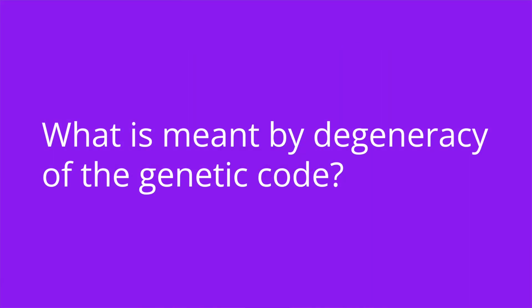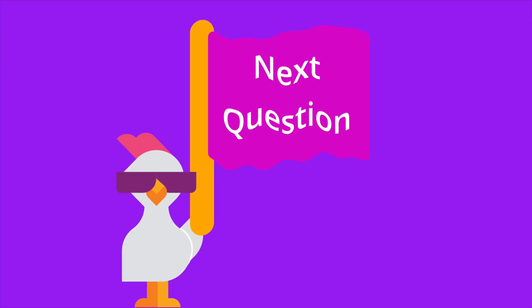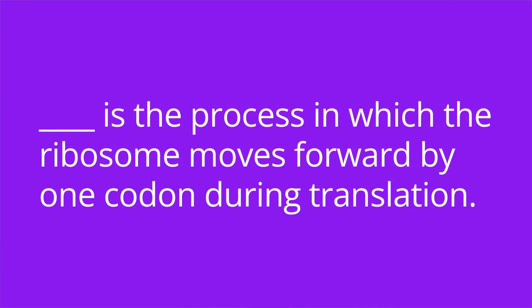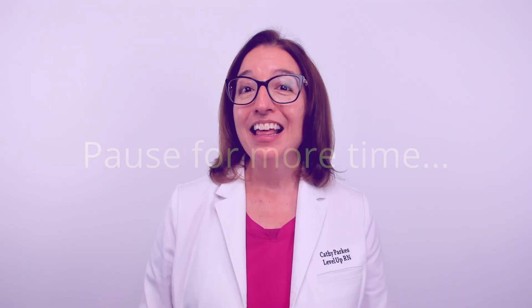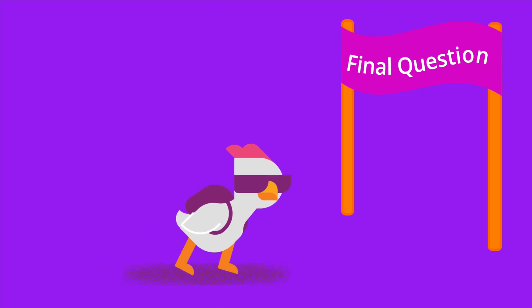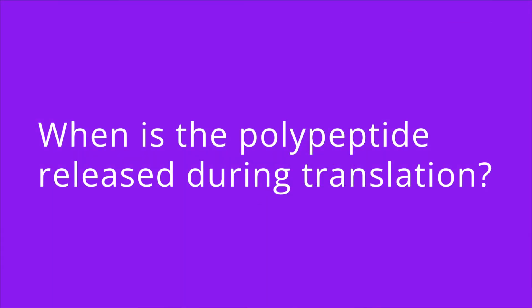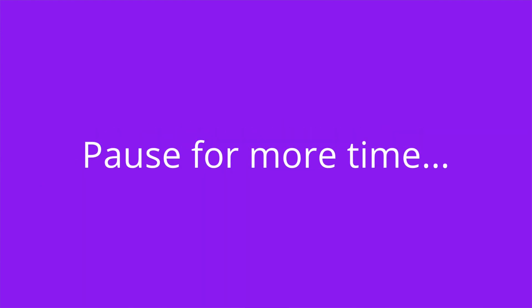Number three: what is meant by degeneracy of the genetic code? This means that there is redundancy in the genetic code, such that multiple codons code for the same amino acid. Number four: blank is the process in which the ribosome moves forward by one codon during translation. The answer is translocation. And number five: when is the polypeptide released during translation? The answer is when the ribosome reaches a stop codon.